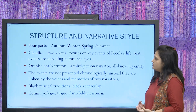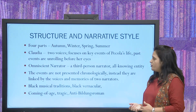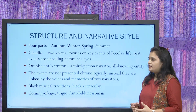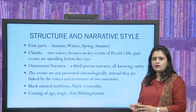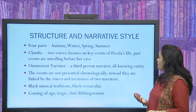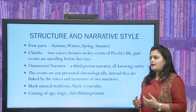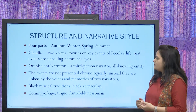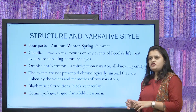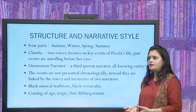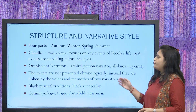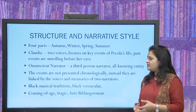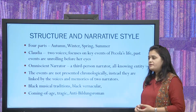There are three narrators. Two of them provide a close point of view, focusing on key events of Pecola's life and past events as they unroll. The novel juggles between past and present events narrated by Claudia. There is also an omniscient third-person narrator — an unknown entity who fills in where child Claudia misses out, since she is a child and cannot know everything happening around her. The events are not arranged chronologically; instead they are linked by the voices and memories of the two narrators.